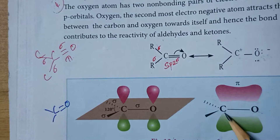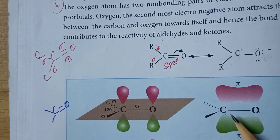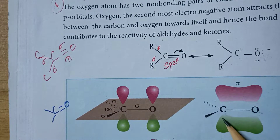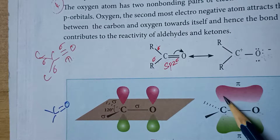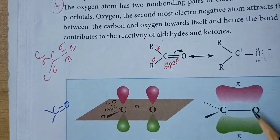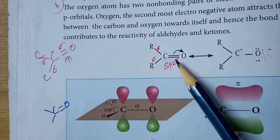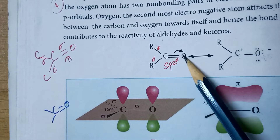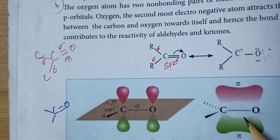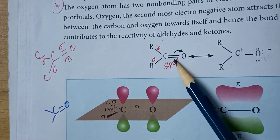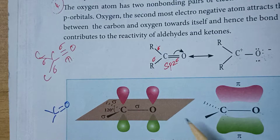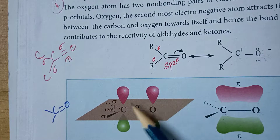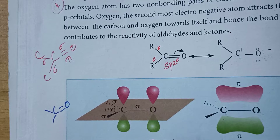In the sp2 hybridized carbon, one of the 2p orbitals — the 2p orbital not involved in bonding — forms a pi bond by sideways overlap with oxygen. That is the extra pi bond present between carbon and oxygen. So in the double bond: one is a sigma bond and the other is a pi bond, which is perpendicular to the plane of the sigma bonds.